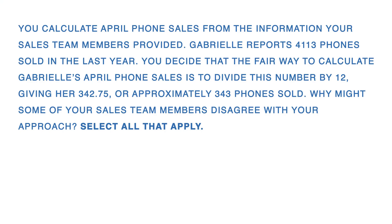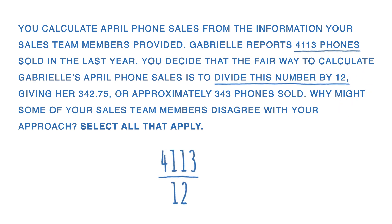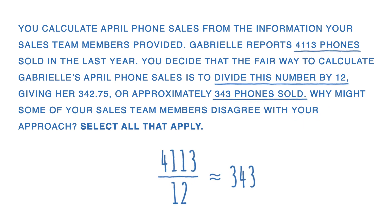This question is as follows. You calculate April phone sales from the information your sales team members provided. Gabrielle reports 4,113 phones sold in the last year. You decide that the fair way to calculate Gabrielle's April phone sales is to divide this number by 12, giving her 342.75, or approximately 343 phones sold. Why might some of your sales team members disagree with your approach? Select all that apply.